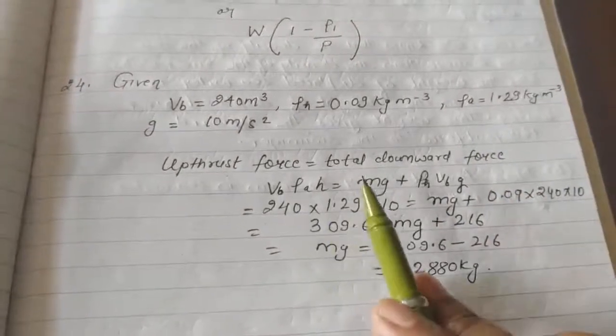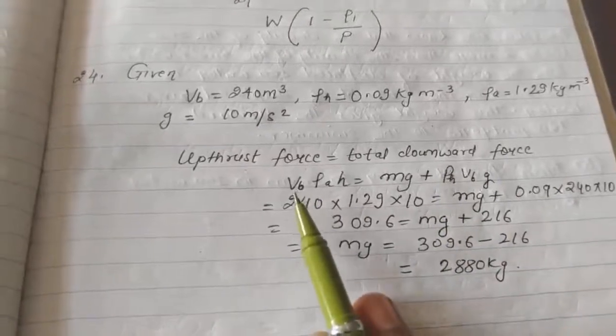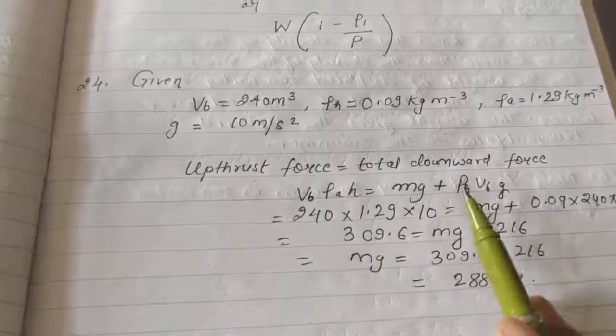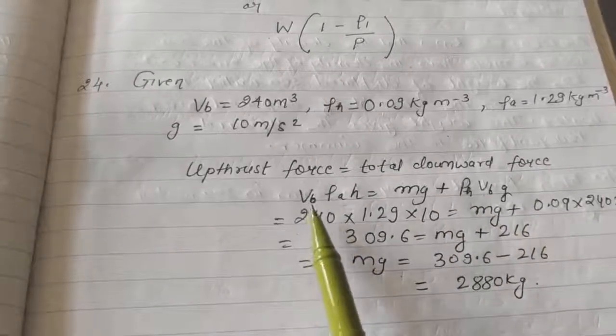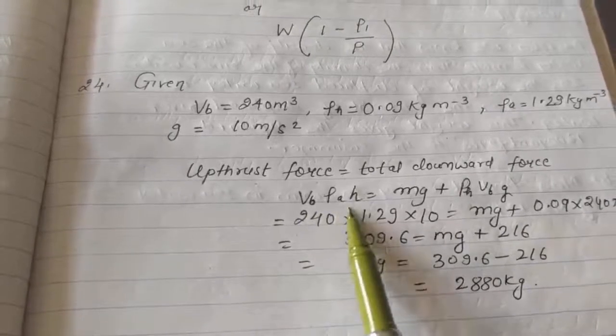Now, upthrust force is equal to total downward force. So, V rho a is equal to mg plus rho h V g. This is volume of balloon, density of air, and this is height.